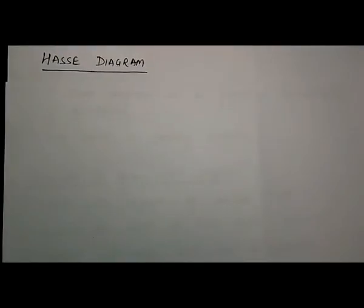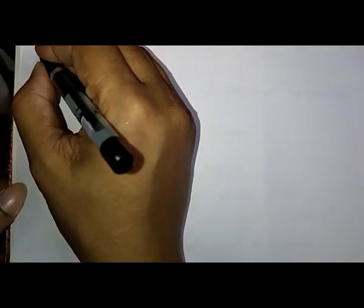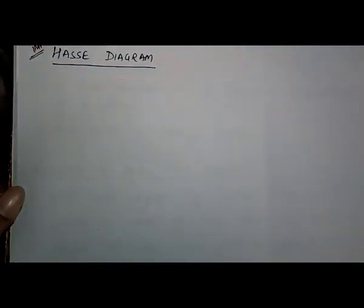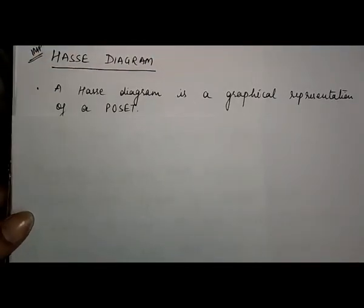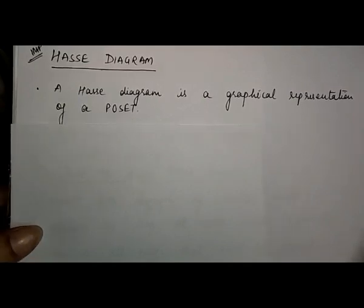Hello friends, today we are going to discuss our next topic, that is the Hesse diagram. This topic is a very important topic. The Hesse diagram is a graphical representation of a POSET. POSET means partial order set, which we have already discussed.